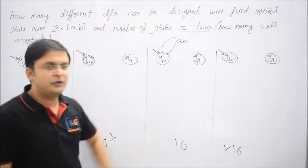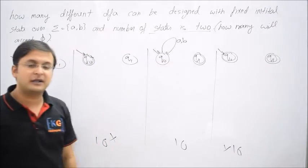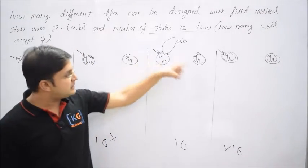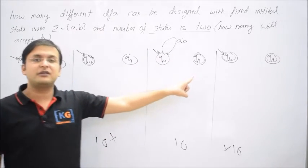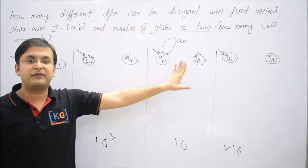Why? See, if I have a loop on Q0 now no matter what comes, I never go to Q1 and Q1 again becomes unreachable.